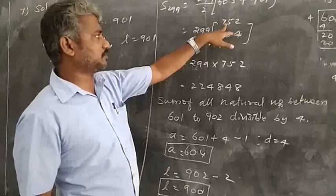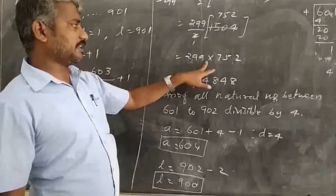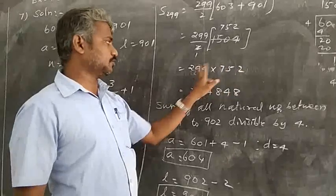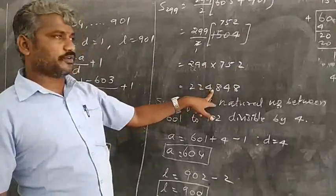1 times 2 is 2, 7 times 2 are 14, 5 times 2 are 10, 2 times 2 are 4. 299 into 752, this 2 multiple means 224,848.